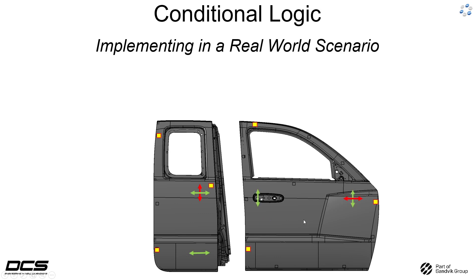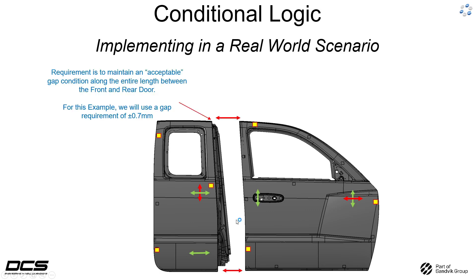Likewise here for the front door. For any door-to-door relationship there's always a requirement to maintain an acceptable gap condition along the entire length of the door-to-door interface. For this example we're going to be using a gap requirement of plus or minus 0.7 millimeters. The gap condition here is in the X direction.